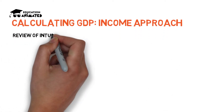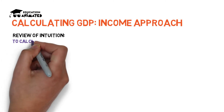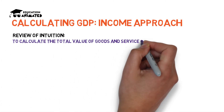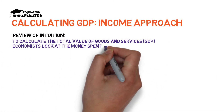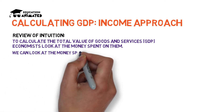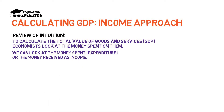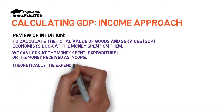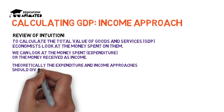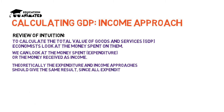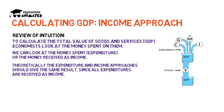Let's review some intuition here. To calculate the total value of goods and services — that's GDP — economists look at the money spent on them. We can either look at the money spent as expenditure on those goods and services, or we can look at the money received as income. Theoretically the expenditure and income approaches should give the same result since all expenditures are received as income. Here you can see a diagram showing how all expenditure from the four economic sectors C, I, G, and X become income or Y.